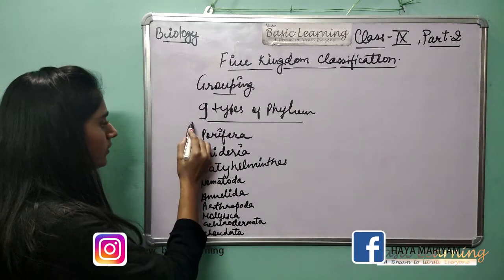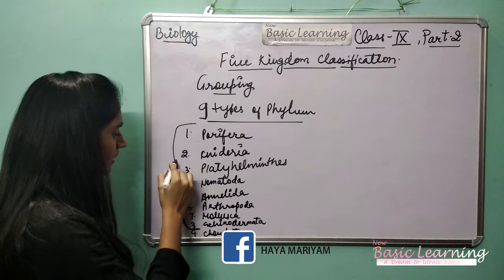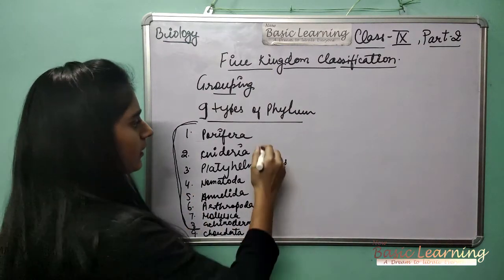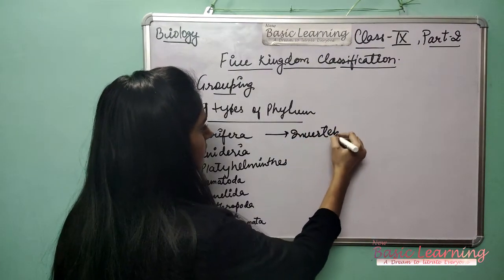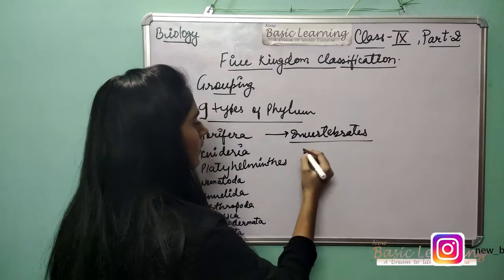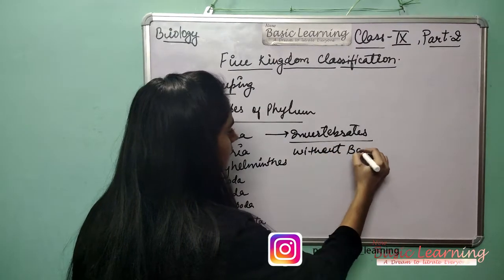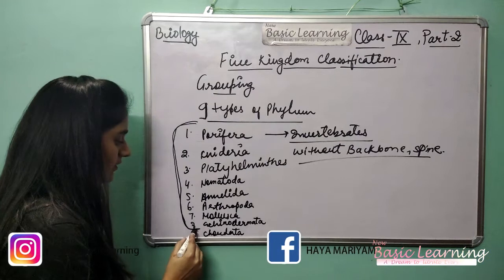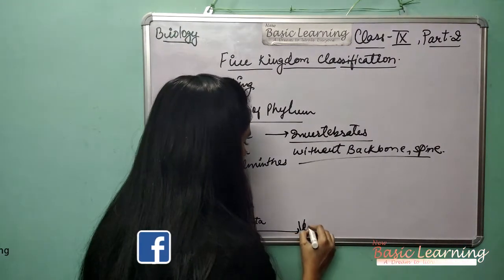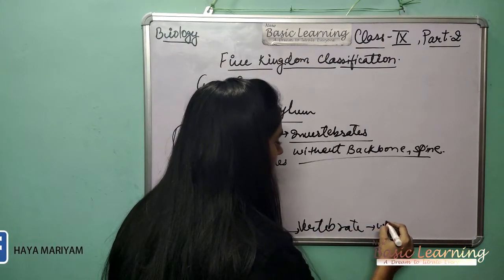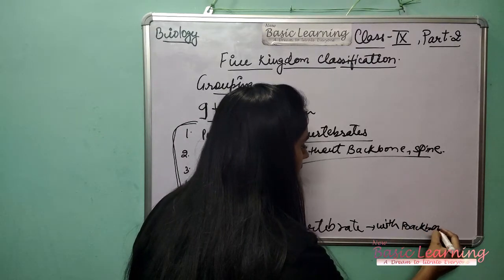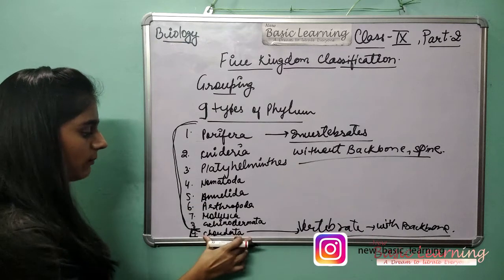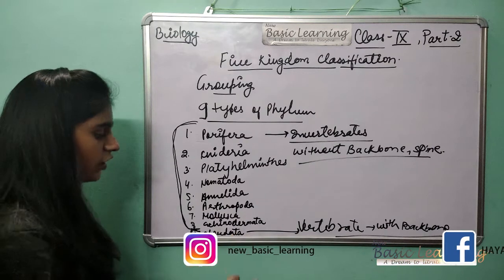The first eight phyla are invertebrates. Invertebrates means which do not have a backbone — or spine, or 'reed ki haddi.' The last one, Chordata, is vertebrate — which have backbone. We humans also come under the category of Chordata. All mammals and all humans, under the category of Chordata, which have backbone.